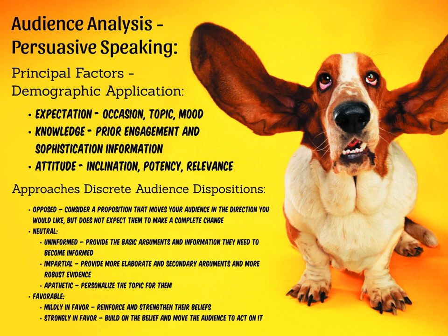Impartial audiences probably only know a surface amount of knowledge, and might not necessarily have a potent feeling about opposition or favor to your proposition. So here you're going to provide more elaborate and secondary arguments that they might not have heard — supply them with robust evidence that demonstrates why you've carefully thought through both sides of the position and arrived at your own conclusions. Finally, apathetic audiences typically have an attitude problem in regards to relevance. They simply don't see why this topic or proposition has anything to do with them, and so they don't have either a favorable or opposed opinion of it.